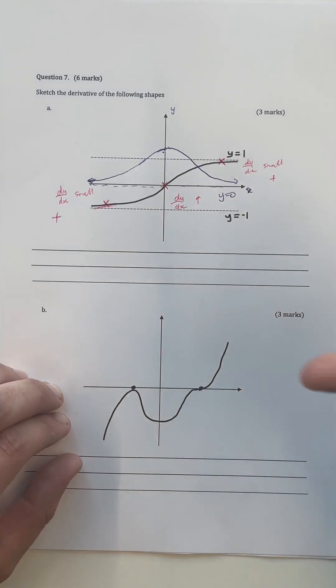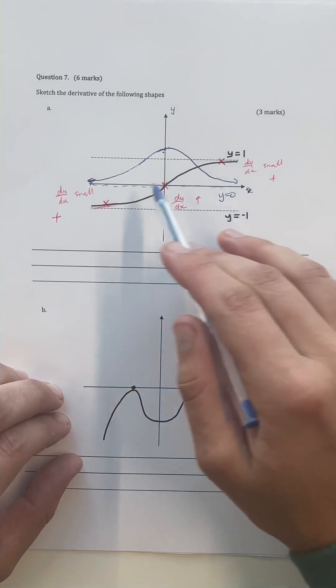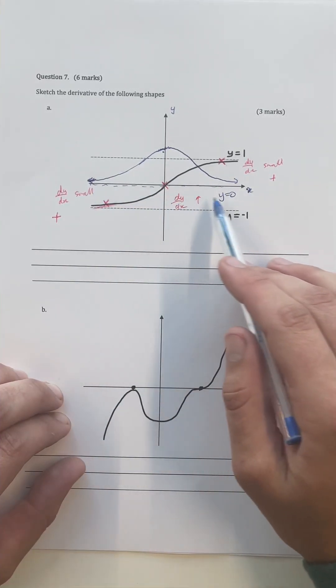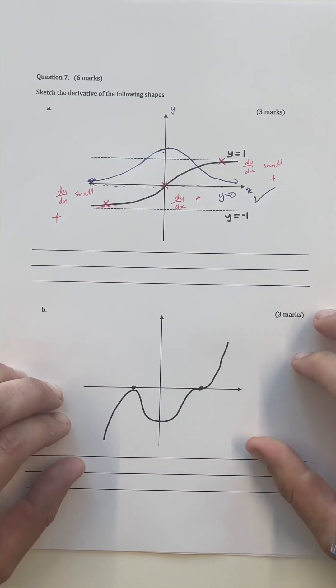However, the most important thing that we need to understand in this question is not only the general shape of this curve here but just understanding that the derivative is going to have an asymptote at y equals zero. So this is our function done.